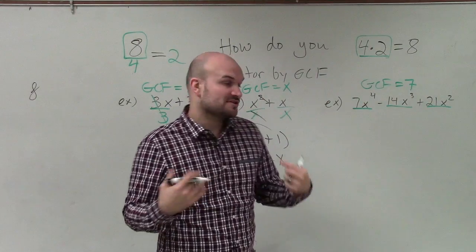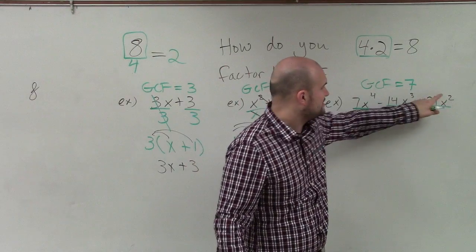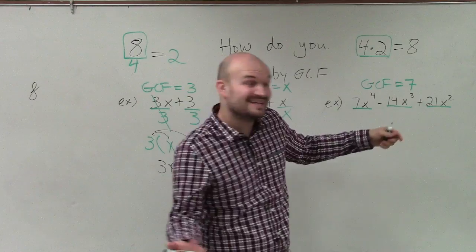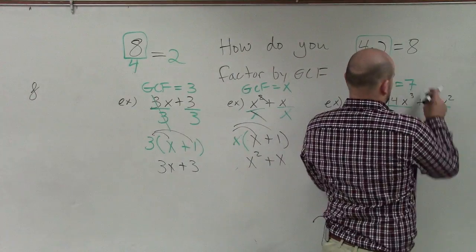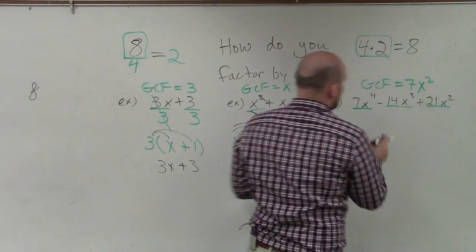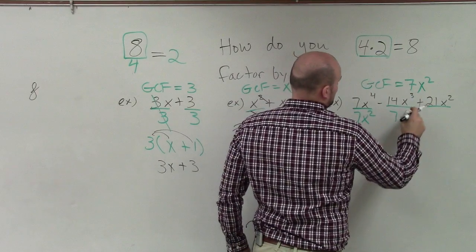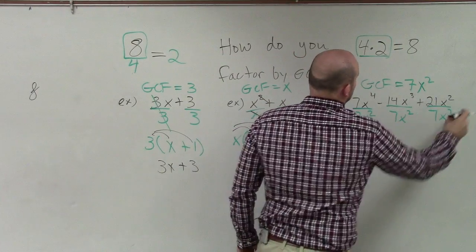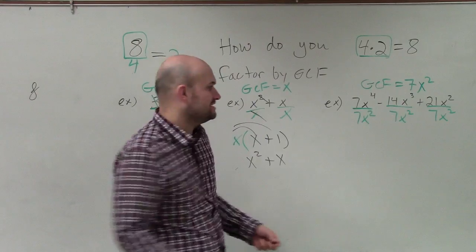Then we look at the variables. Well, the smallest variable is x squared. Does x squared divide into x cubed, x fourth? Yes, it does. So I divide every single term by 7x squared because that is the largest term that can evenly divide into each term.